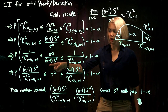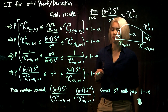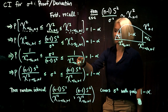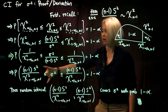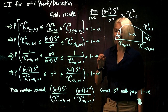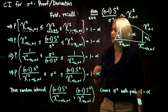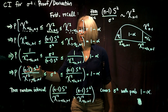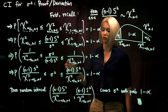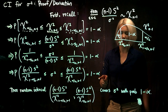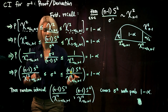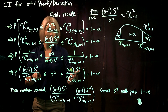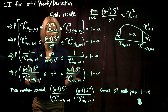We want sigma-squared alone in the middle, so we multiply everything by n minus 1 times s-squared. Multiplying through gives us this probability, which is still 1 minus alpha. Now we have the probability that this random quantity is less than or equal to sigma-squared, which is less than or equal to this other random quantity, equals 1 minus alpha. These are random quantities because s-squared is our sample variance — it varies from sample to sample — making both endpoints random.